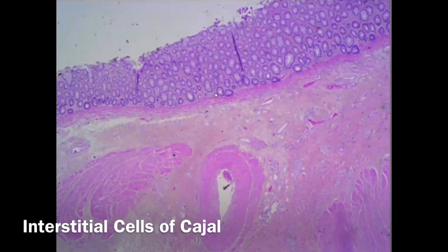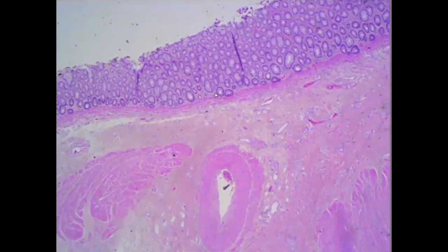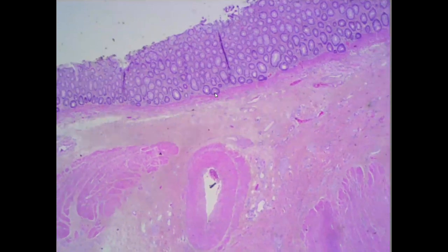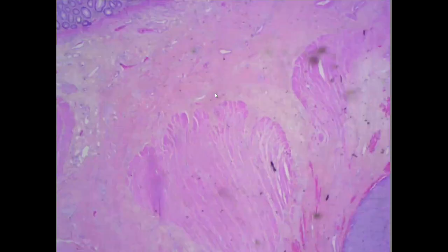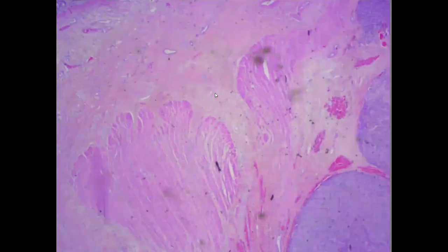So we will expect that this tumor will arise and will be confined to the muscularis propria. Or if it went bigger in size, then it can encroach the submucosae or the serosal layer. So now I will go to the muscularis propria.